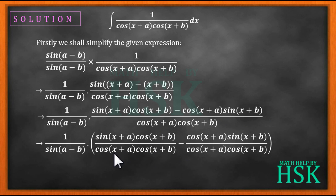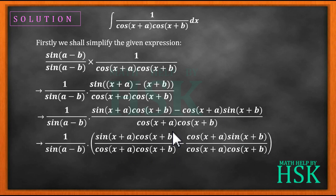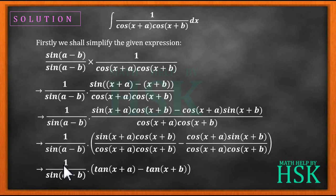Further, I divide the denominator separately into these terms: sin(x+a)cos(x+b) over cos(x+a)cos(x+b), minus cos(x+a)sin(x+b) over cos(x+a)cos(x+b). Here, cos(x+b) cancels to give tan(x+a), and cos(x+a) cancels to give tan(x+b). So this becomes 1 upon sin(a-b) into [tan(x+a) minus tan(x+b)].